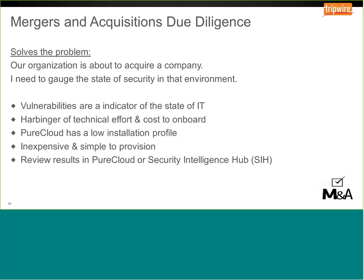For mergers and acquisitions due diligence, the need is typically a very quick assessment of an acquisition target — gauging the security status of that environment. Assessing the risk can also indicate the technical cost and effort to onboard the organization. A high number of vulnerabilities could be a red flag and an indicator of other problems with that organization's IT environment. This requires no dedicated hardware or software, so it's quick to set up, and results can be brought into the Pure Cloud dashboard or imported into the Tripwire Security Intelligence Hub.